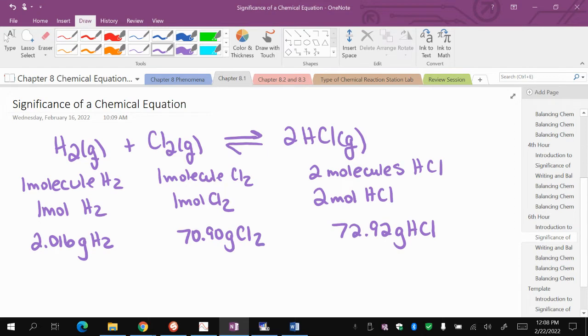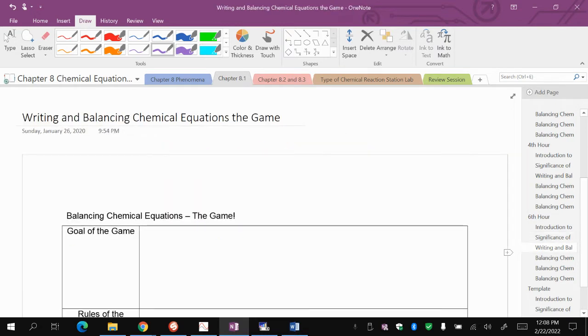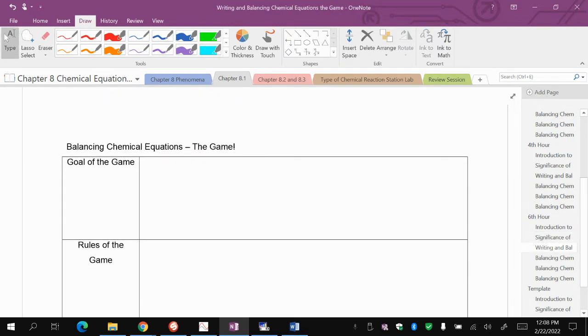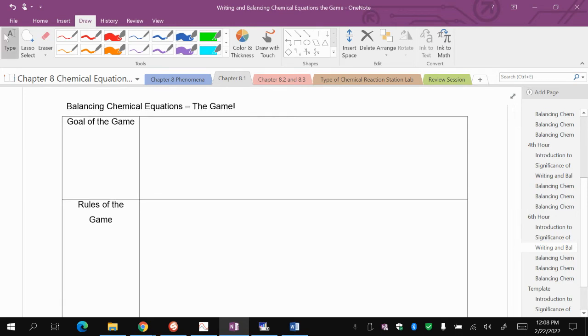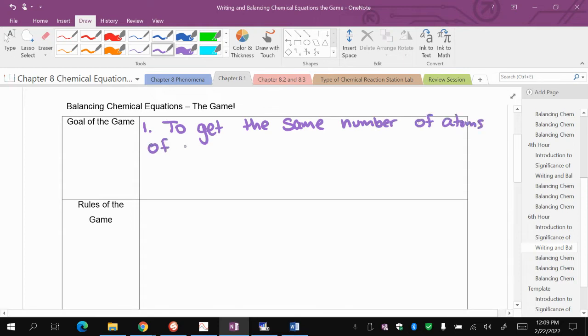What we're going to look at now is writing and balancing chemical equations in terms of it being a game. Games have a goal, they have rules, and they have tips. So the goal of the game, the first goal, is to get the same number of atoms of each element in the reactant and the product side.